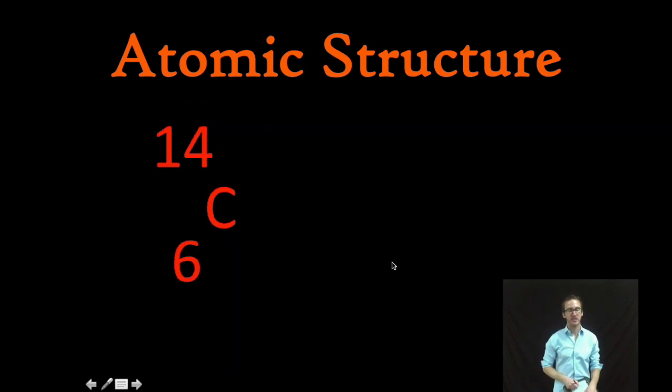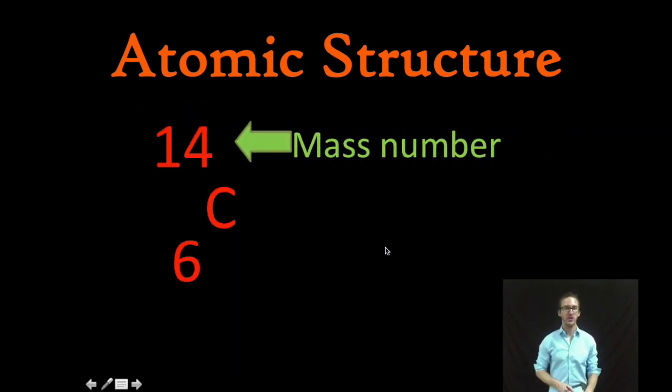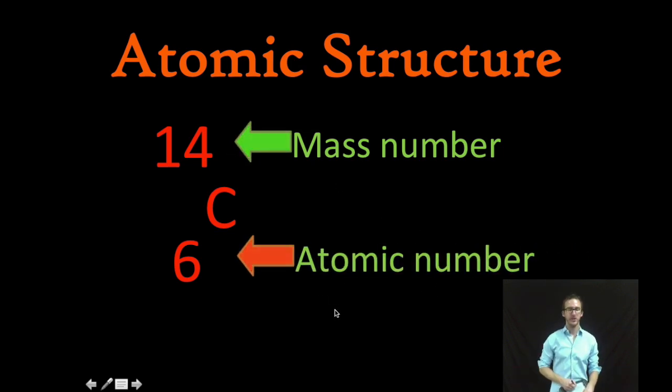So here's an example of that same isotope of carbon in what's called nuclide notation. The mass number's on the top the atomic number's on the bottom. Nuclide notation.